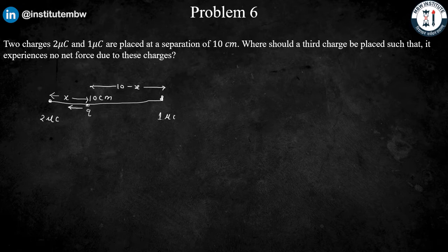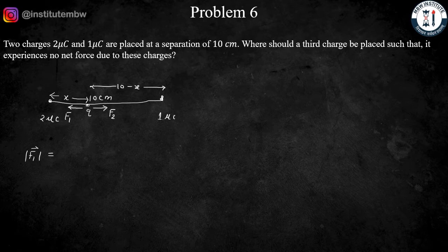So force due to 1μC will be in this side, so I am assuming it is F1, and force due to 2μC will be in this side, that is F2. So it experiencing no force, it means magnitude of F1 should be equal to magnitude of F2. We know the formula of Coulomb's law.